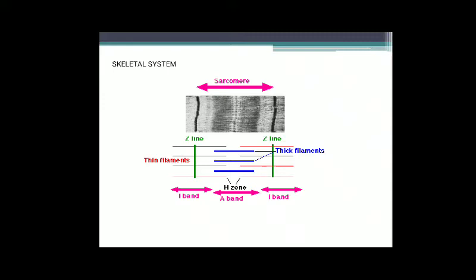In the middle of the A-band, a thin fibrous M-line is present. The portion of myofibrils between two successive Z-lines is the functional unit of contraction called sarcomere. At resting stage, thin filaments overlap the thick filament. The part of the thick filament not overlapped is known as H-zone, where there is no overlapping.